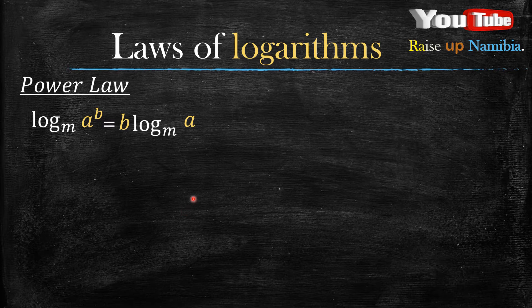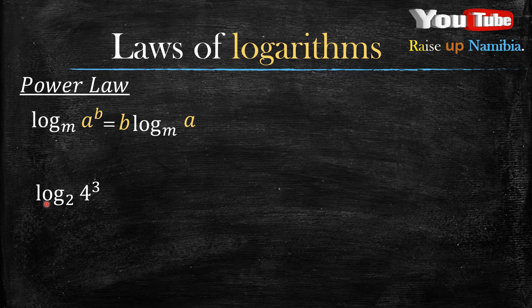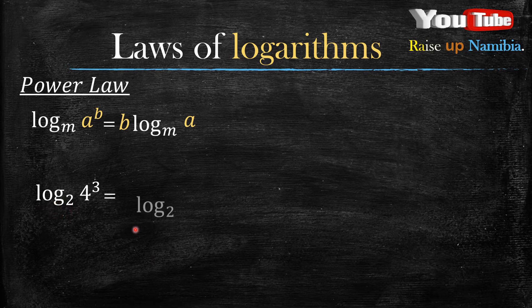Let's quickly check an example. For example, you have log base 2 of 4 raised to the power 3. How can you rewrite this according to this law? You check: what was your base? Your base here is 2, which means log base 2. You rewrite that log base 2 just the same way it is.